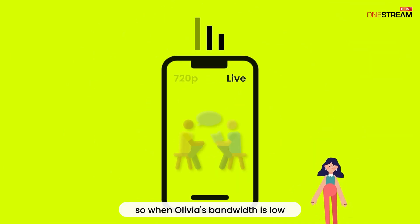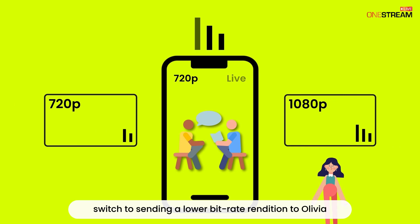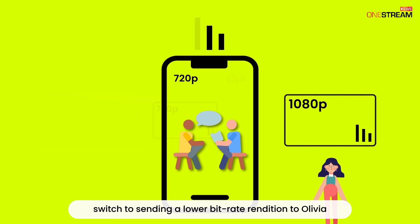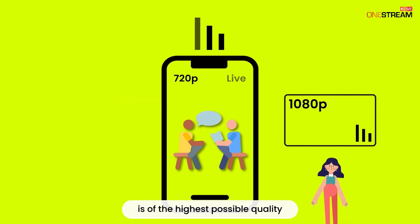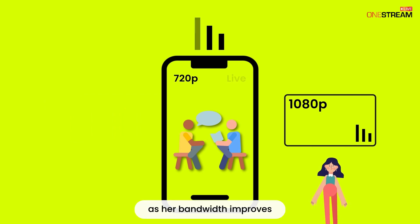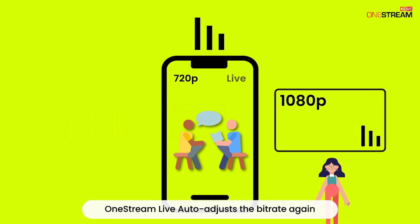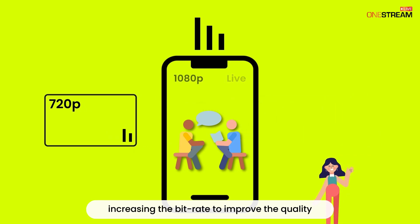So, when Olivia's bandwidth is low, One Stream Live will dynamically switch to sending a lower bitrate rendition to Olivia to ensure that the video is of the highest possible quality. As her bandwidth improves, One Stream Live auto-adjusts the bitrate again, increasing the bitrate to improve the quality.